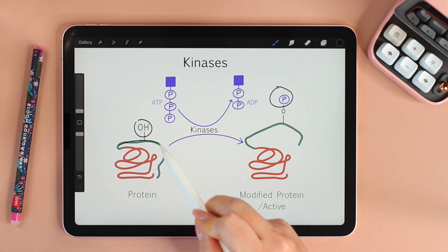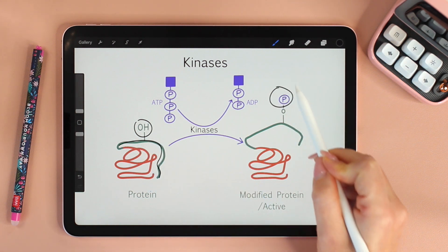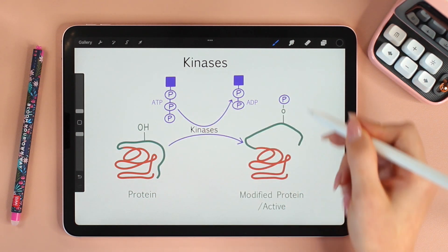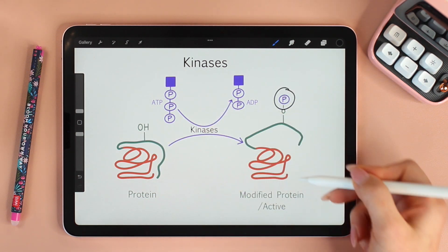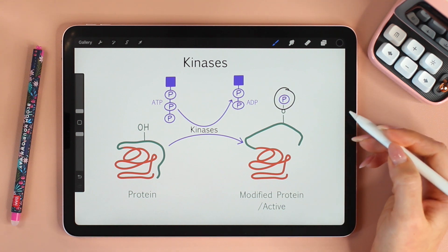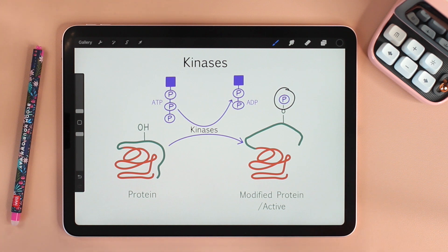Notice how the whole structure of the protein changed when the phosphate was added. And hence, this changes the protein from inactive to active. And what do we call this when a phosphate group is added on a protein? This is called phosphorylation. So kinases phosphorylate.